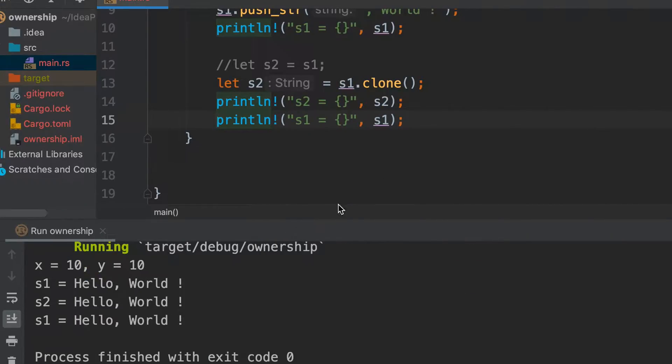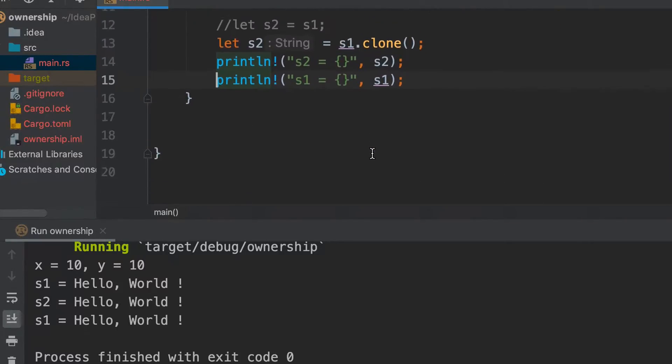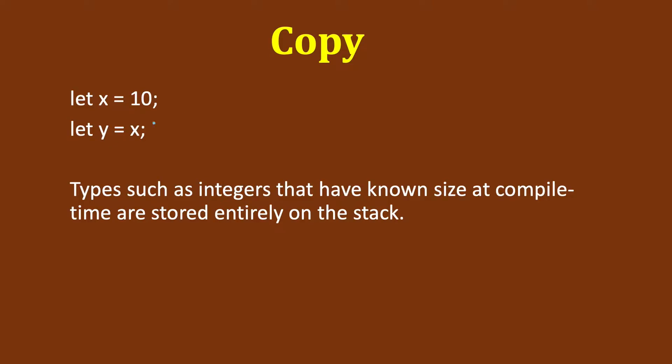Then it works because here both s1 and s2 have a different copy of the same data in heap. So both are pointing to different memory locations. That was it for clone.